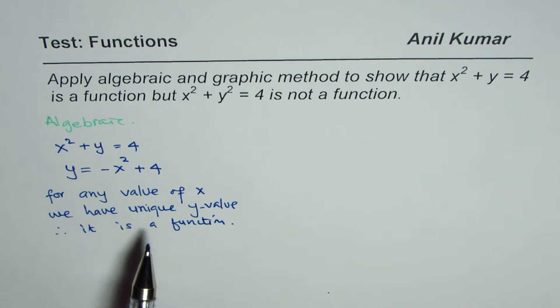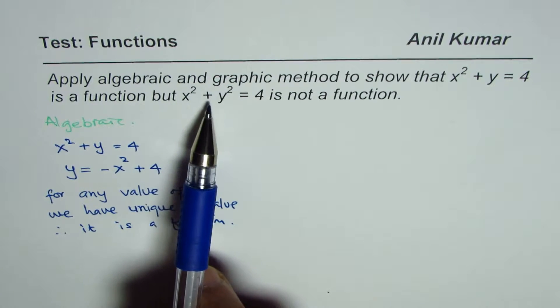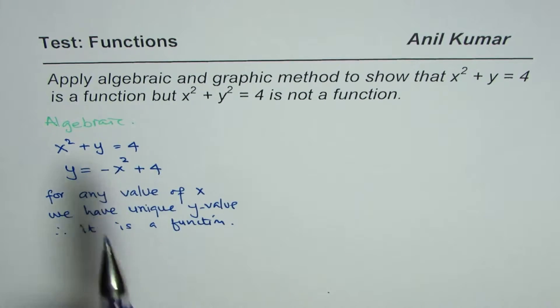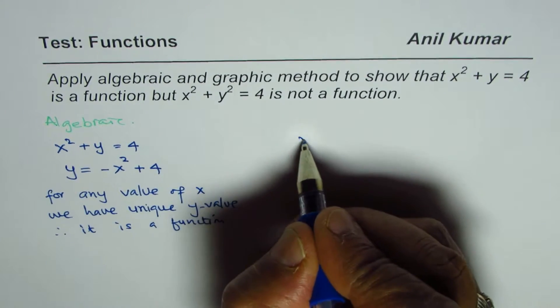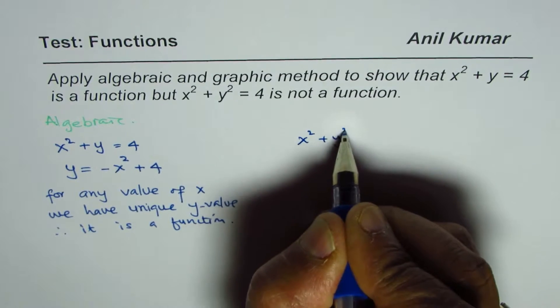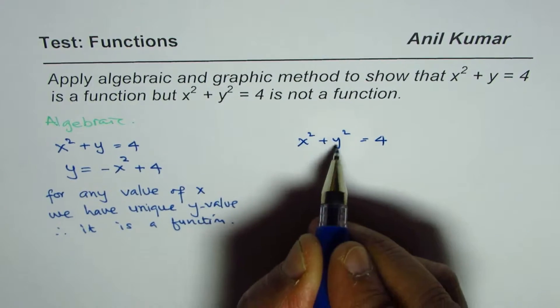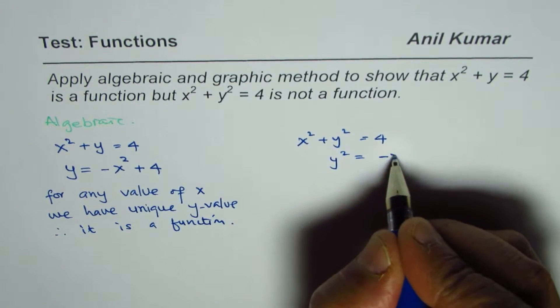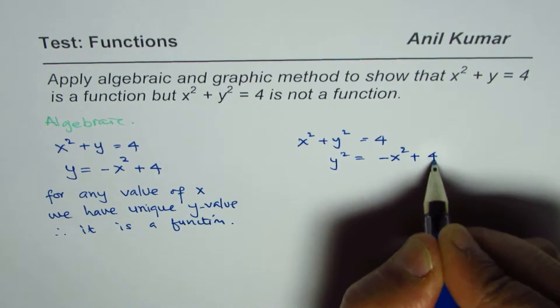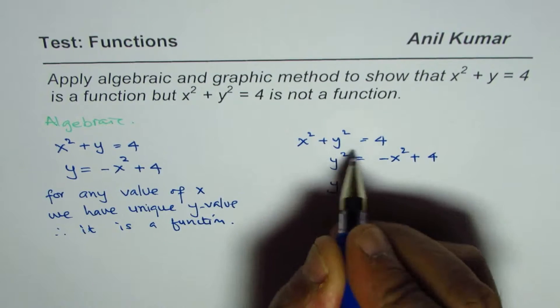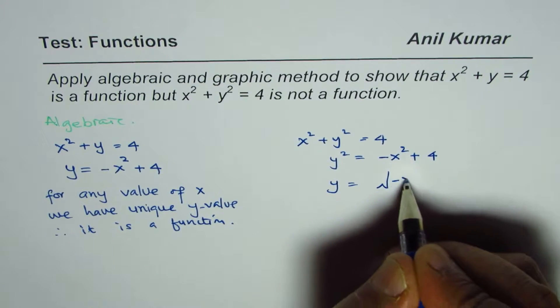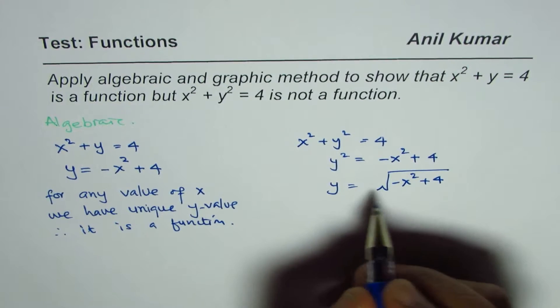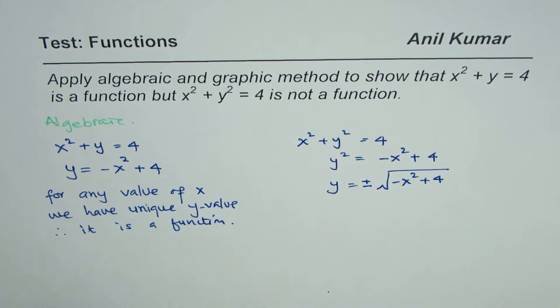Now we'll do the same thing for x² + y² = 4 and see whether that is a function or not. If I have x² + y² = 4, let us isolate y. We get y² = -x² + 4, and y = ±√(-x² + 4). Whenever you do square root you have to write plus and minus.